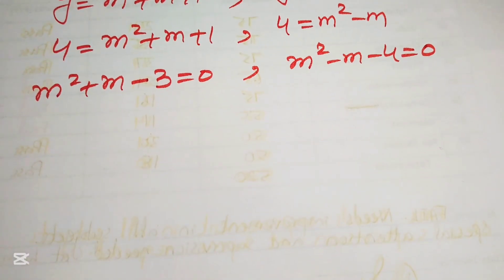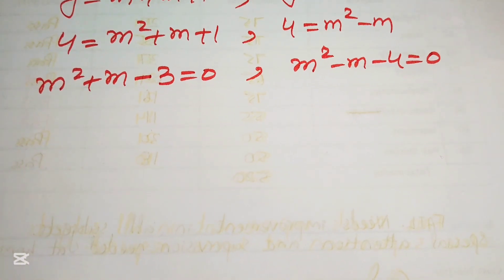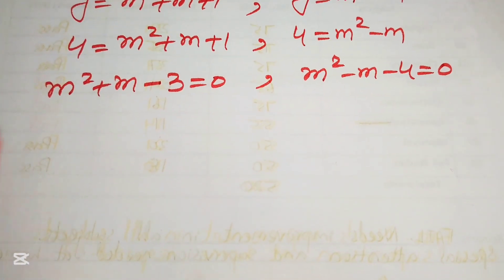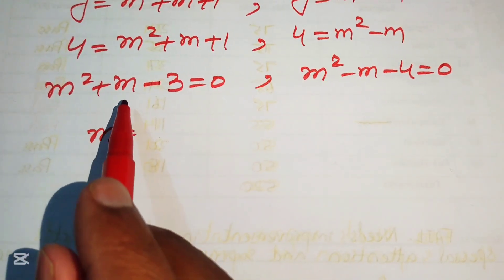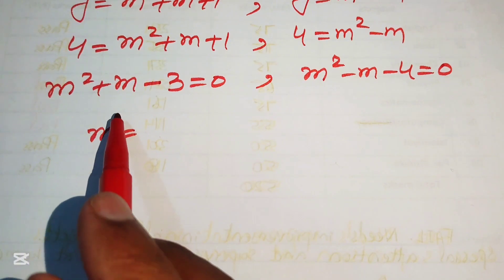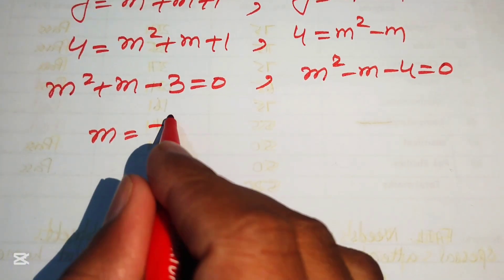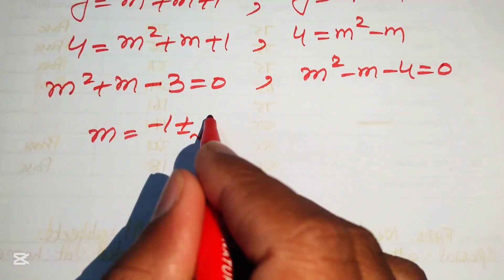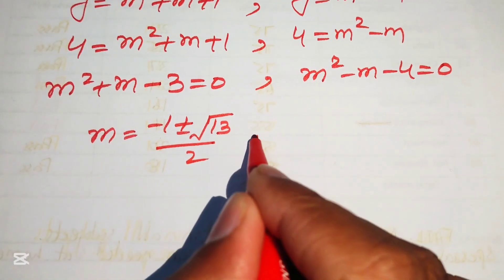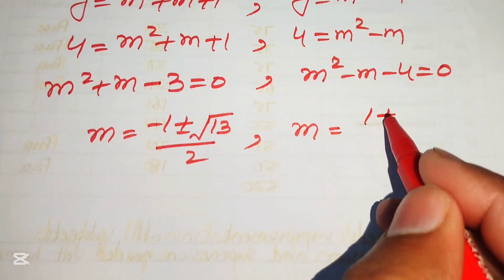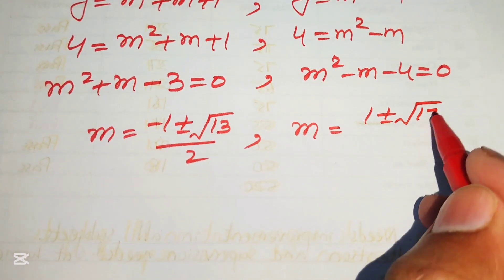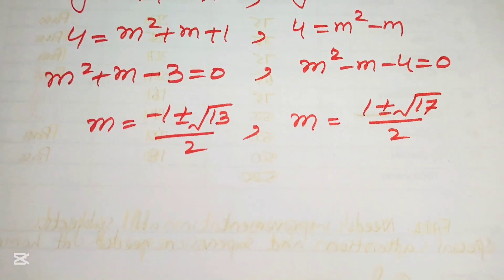We now have two quadratic equations in m. Applying the quadratic formula: from Case 1, m = (-1 ± √13) / 2; from Case 2, m = (1 ± √17) / 2.